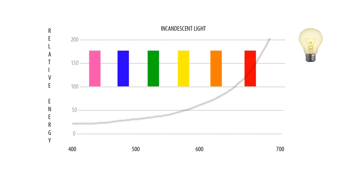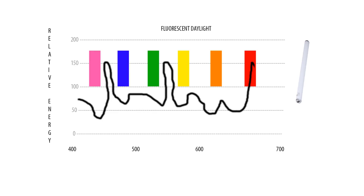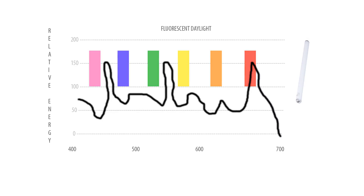Artificial light only typically contains a portion of true daylight. If you want to know exactly what your color looks like, you need to view it under regular daylight. And when you're tinting, that can make life a lot easier.